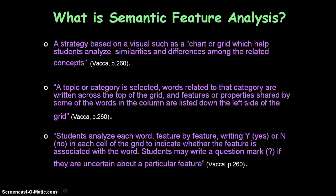A topical category is selected. Words related to that category are written across the top of the grid, and features or properties shared by some of the words in the column are listed down the left side of the grid. Students analyze each word feature by feature, writing yes or no in each cell of the grid to indicate if the feature is associated with the word. A question mark is written if students are not sure about a particular feature. Note that a plus or minus sign can be used interchangeably instead of a yes or no.